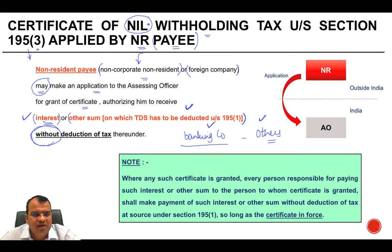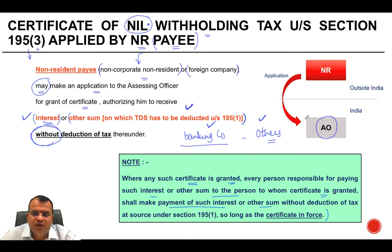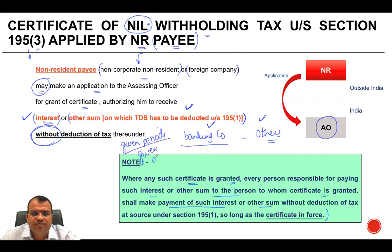For making an application to the Assessing Officer for nil withholding tax, there are various conditions that each applicant needs to satisfy. If any such certificate is granted, every person responsible for paying such interest or other sum to the certificate holder shall make payment without deduction of tax at source under Section 195, so long as the certificate is in force. Each certificate is valid for a given period and for certain given amounts; the payer must follow the certificate and cannot choose to ignore it.